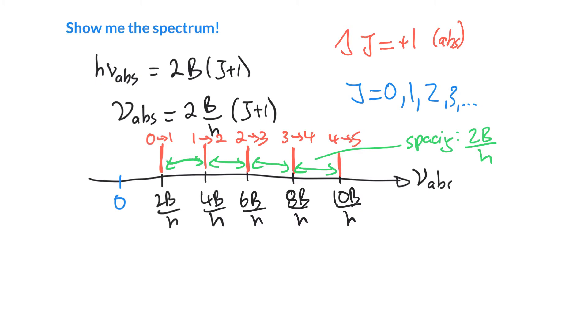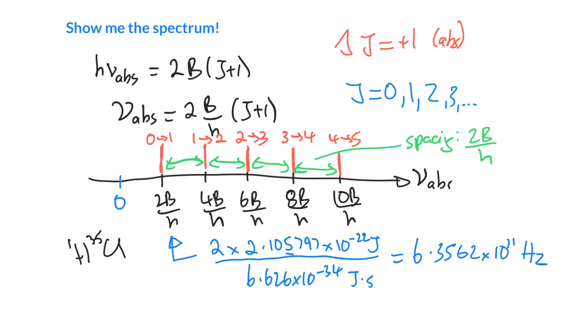We started by asking about the hydrogen chloride molecule. What would the spectrum look like? We should calculate exactly where this first line is, calculate the frequency, and then we basically just add another time and another time to reproduce the spectrum. We can plug in what we have. We've got 2, and B we calculated to be 2.105797 times 10^-22 joules. And h is Planck's constant, 6.626 times 10^-34 joule seconds. Our units are going to be seconds to the minus 1, and I make that 6.3562 times 10^11.